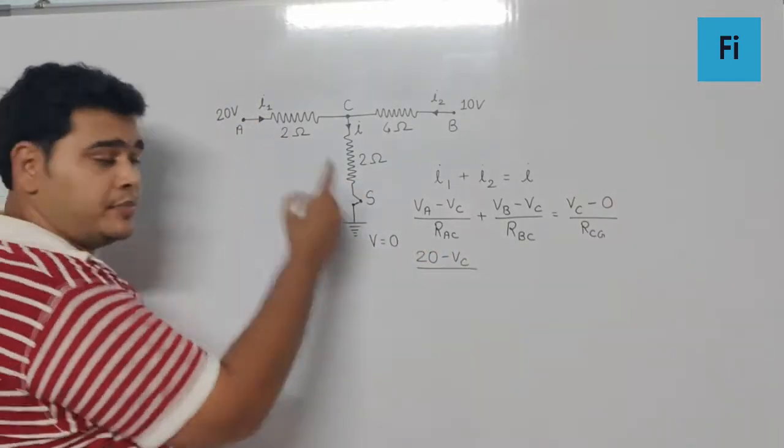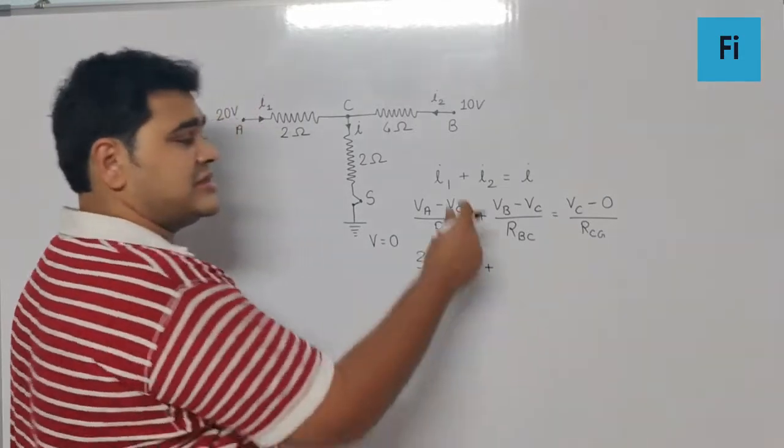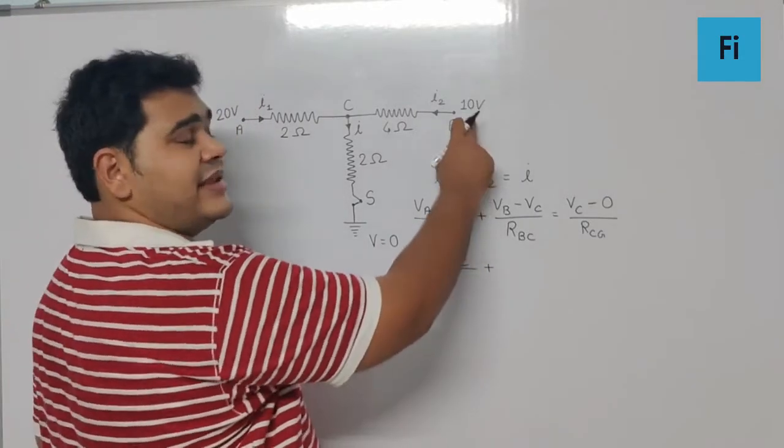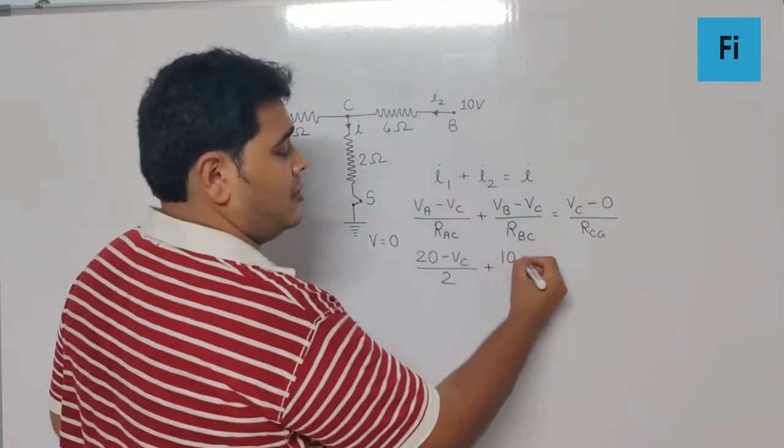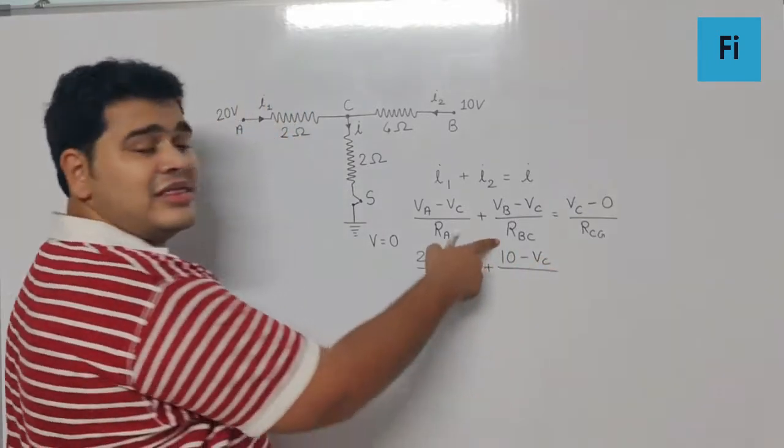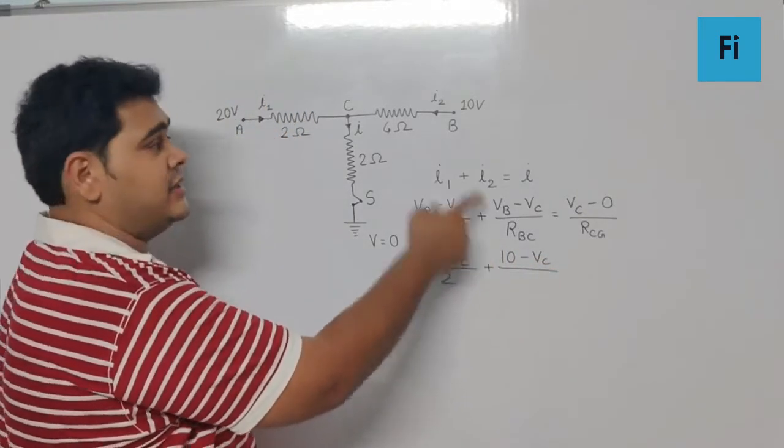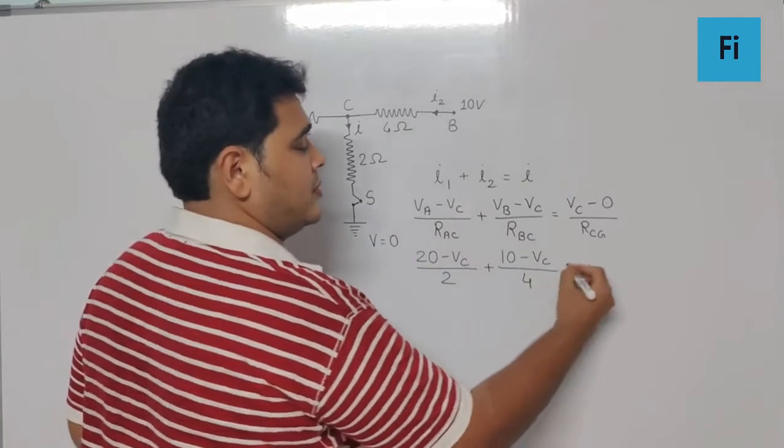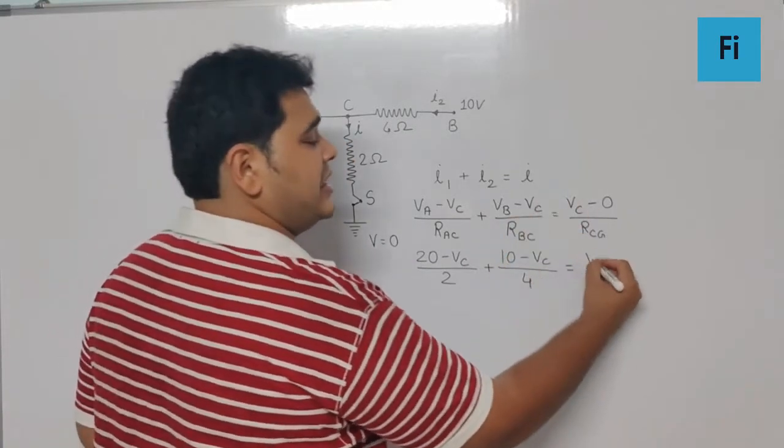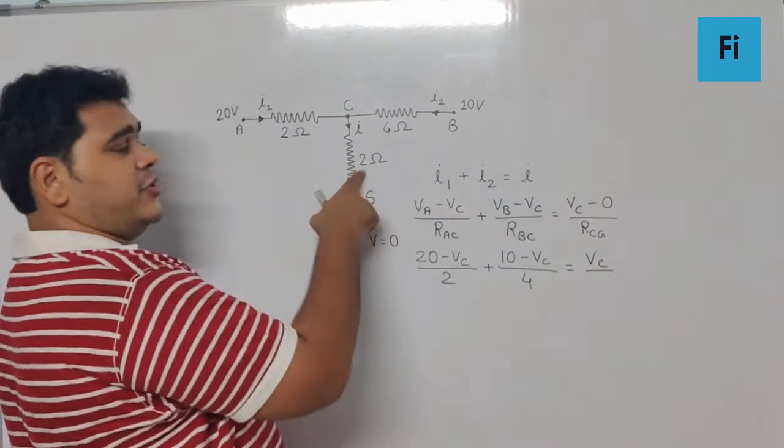Plus VB is at 10 volt minus VC is unknown, the resistance between B and C is 4 ohm, is equal to V at C unknown upon the resistance between C and ground is 2.